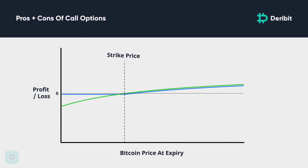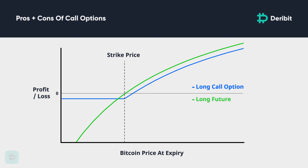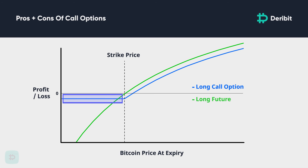A trader may wish to buy a call option instead of longing a futures contract if they believe the price is going to move higher but they wish to have a fixed risk. It is possible to use a stop loss when long a futures contract to limit your risk. However, a call option has one very big advantage: with a regular margin account, the call option cannot be stopped out or liquidated. If the price spikes down even temporarily, the trader who is long the futures contract may be stopped out and unable to benefit from a subsequent price increase. The trader who is long the call option will still be in the trade and able to benefit if the price then rallies. Stop losses also have the added risk of slippage, where due to the violent nature of price movement and thin order books, the stop loss order executes at a worse price than desired, leading to a larger than expected loss. Long options positions do not have this problem, as the maximum loss is limited to the premium paid and can never go higher.